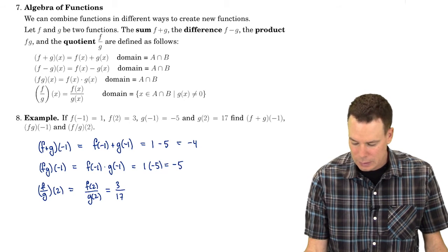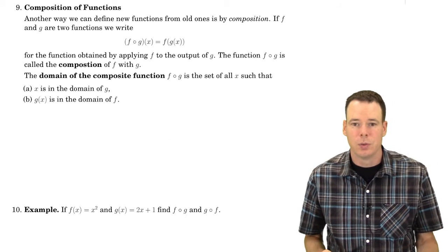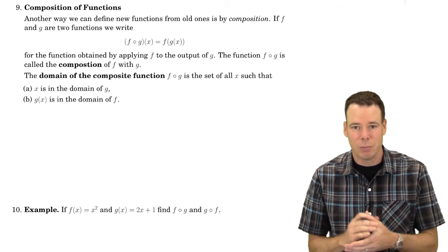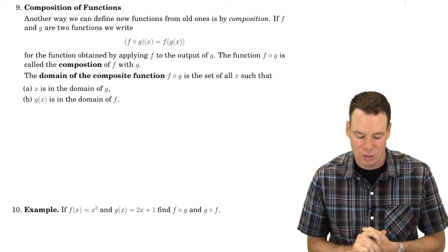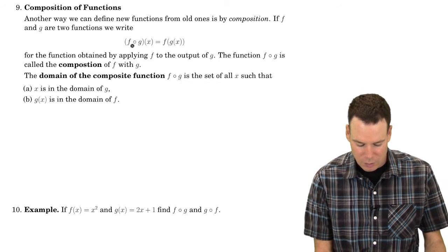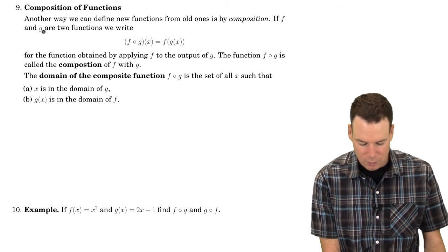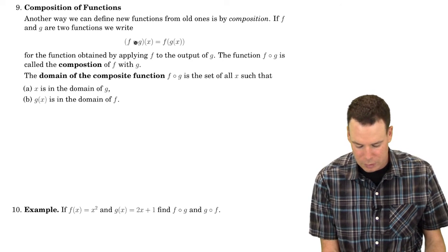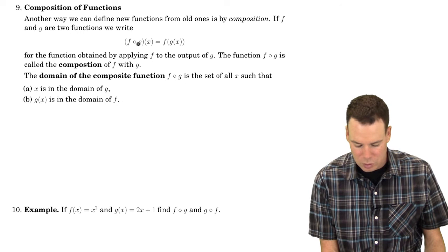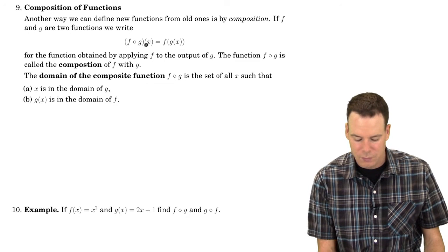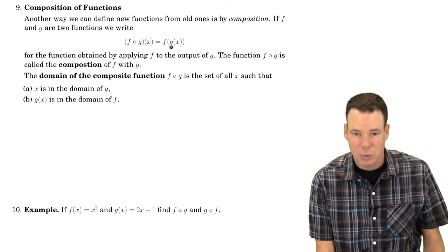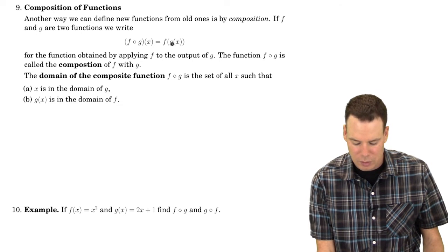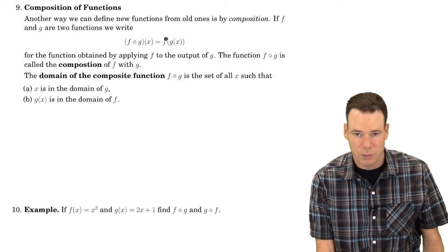Let's look at how to combine two functions in a slightly more interesting way: composition. The composition of two functions f and g is defined as follows: we denote it f with a little circle between them g. The composition of f and g at x is defined by first applying the function g to the input x, and then whatever comes out of that, plugging it into the function f.